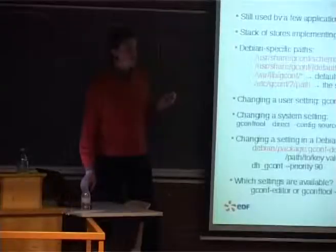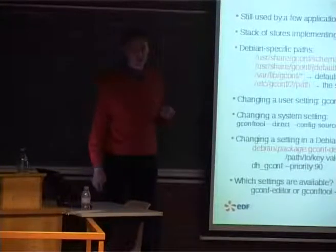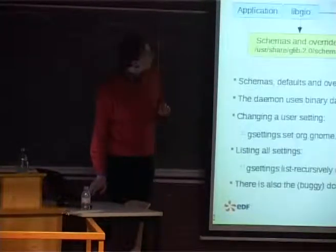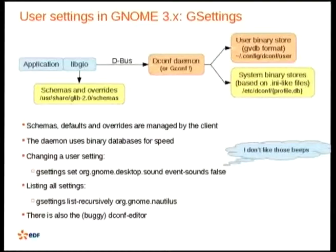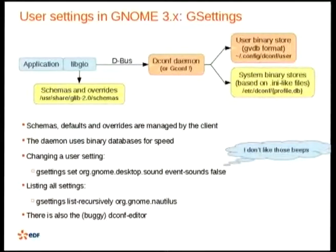Starting with GNOME 2.32, settings were migrated to GSettings, completing fully in GNOME 3. GSettings works entirely differently — the settings are managed directly by the GLib library, which handles the schemas and overwrites. You can see default settings without a daemon. By default it is plugged to the dconf daemon, but you can also use GConf as a legacy backend. Some people prefer the XML store, but dconf only has binary stores.